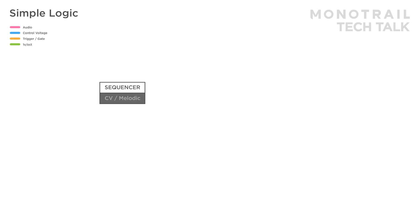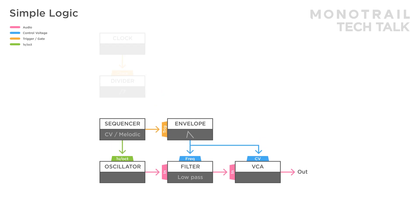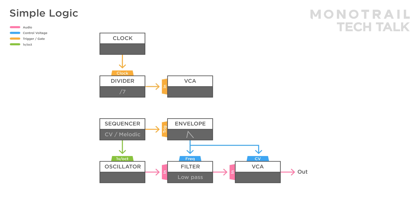Simple logic is fun for all sorts of stuff — for example to start and stop sequencers. Here you see a simple voice with sequencer. A master clock is sent to a divider. An uneven division is used as the input for a VCA and a copy of the clock is used to modulate the CV input of that VCA. The result is used to forward the sequencer. In this setup the clock only progresses the melody if the divider outputs a high gate.